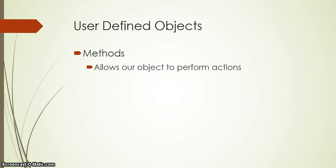In the previous video when we created the attributes, we created them under the private heading because we didn't want other programs to be able to access those attributes directly. Because they were under private, they can only be used within the object. Our methods, however, we're going to allow users from other programs to use, and this is how we'll interact with those attributes.